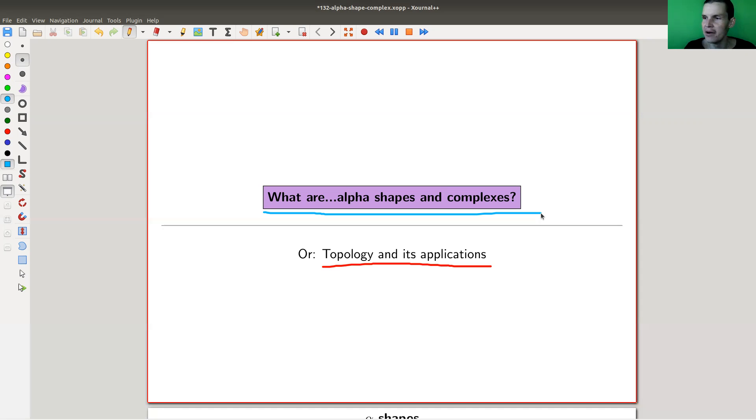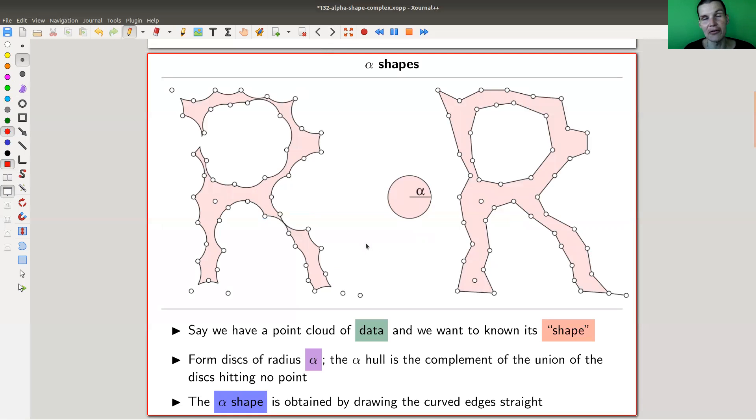Where you have applications of even abstract concepts like homology or whatever. But for now, I stay with alpha shapes and alpha complexes. I should say I don't quite know where the name comes from. Shape and complex, that's fine. But where does alpha come from? I'm not quite sure we'll have an alpha. But otherwise, shape and complex is the main word.